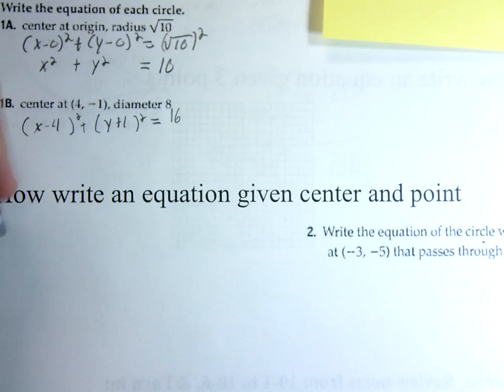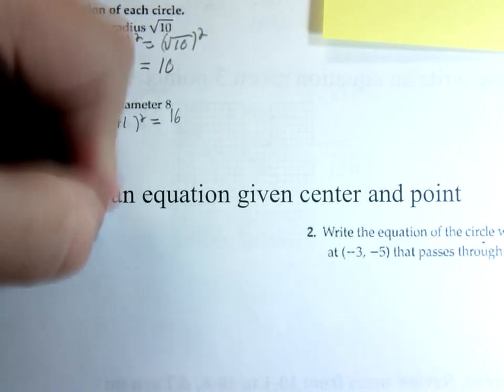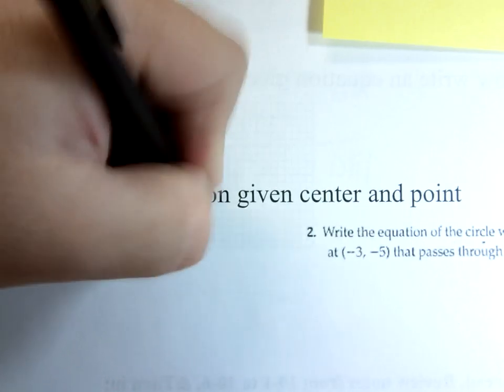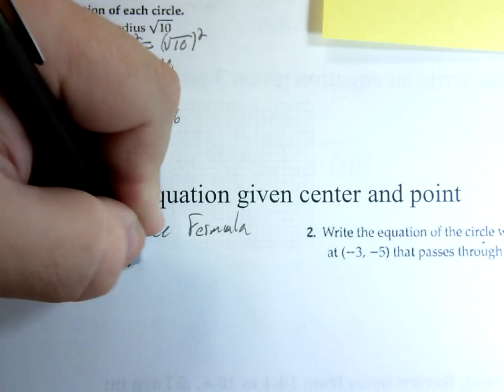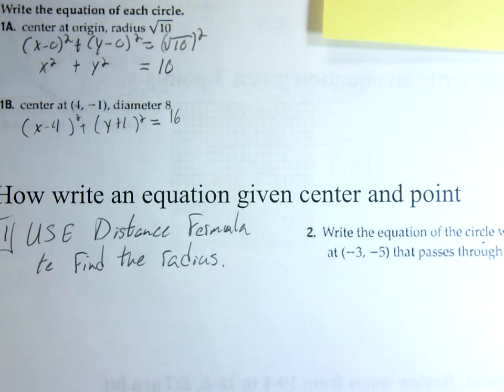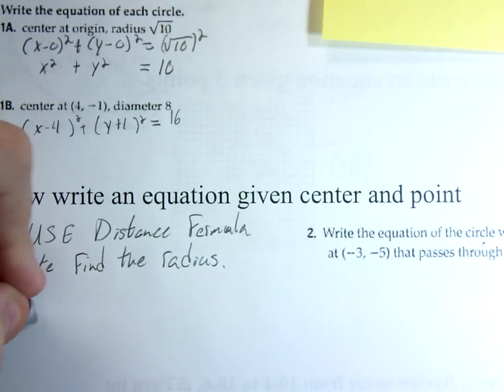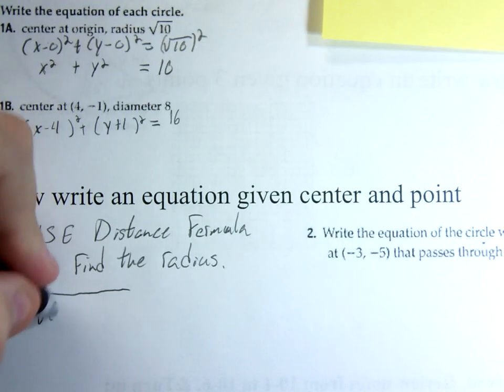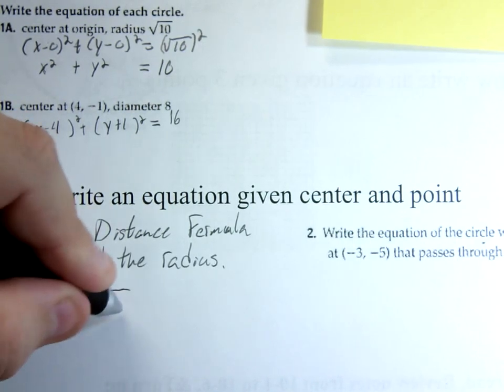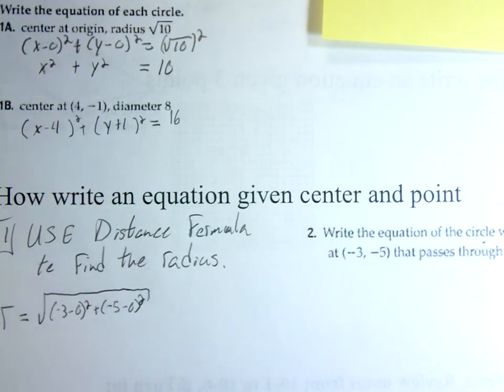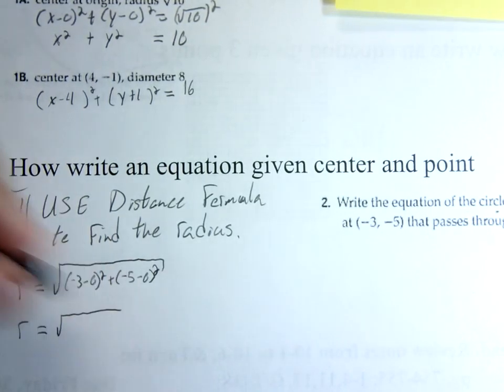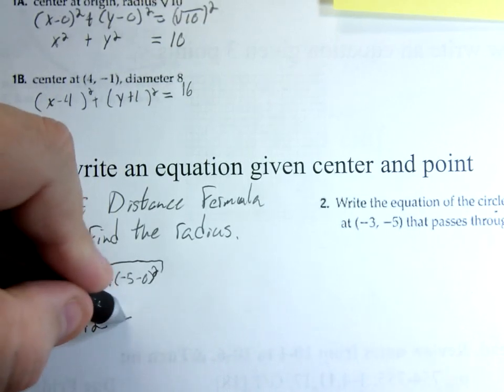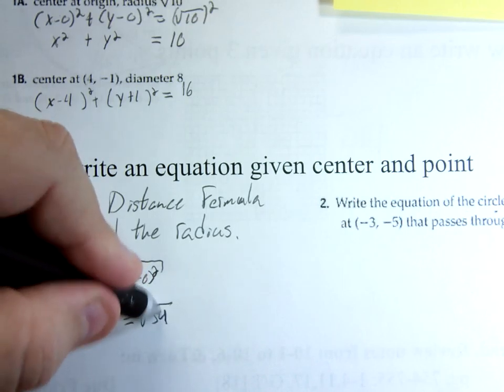That's okay. So now, instead, you have to find the thing that we're missing still. What do we still need? We need the radius. So, the first thing we have to do is use the distance formula to find the radius. So, r is going to equal square root of 3 minus 0 squared, negative 5 minus 0 squared.